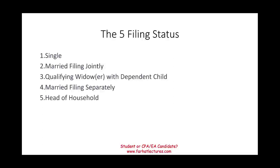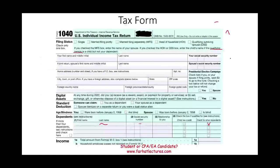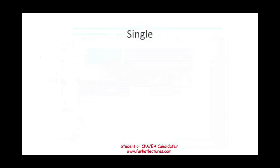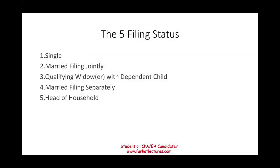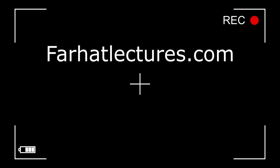So the five filing statuses are: single, married filing jointly, qualifying widow or widower (what the IRS calls qualifying surviving spouse), married filing separately, and head of household.